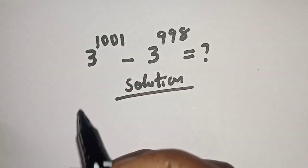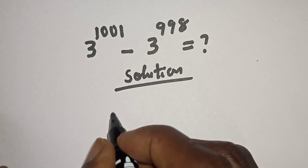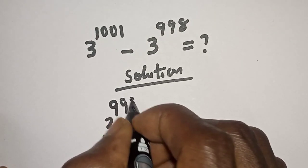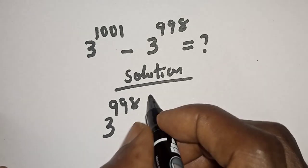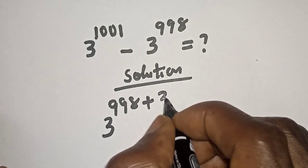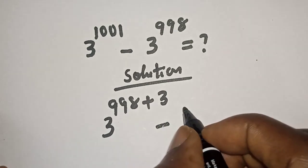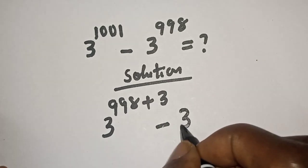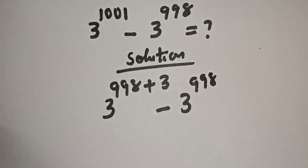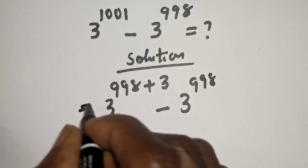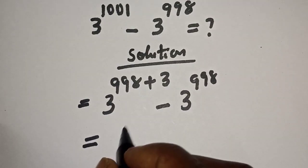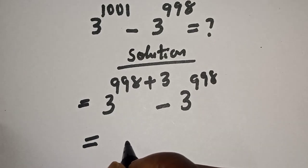3 raised to power 1001 can be written as 3 raised to power 998 plus 3, minus 3 raised to power 998.